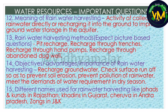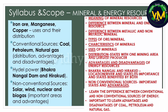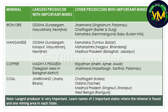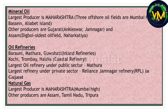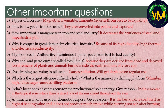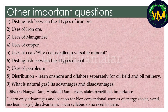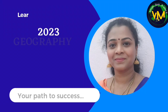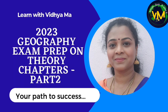Coming to mineral and energy resources - here is the syllabus and scope. Please learn the tabular column by heart. The largest producer of each mineral is an often-repeated question. Also learn two important states for each mineral and at least one mining area for each state. For mineral oil, learn oil refineries and oil fields separately. Under energy resources, the largest producers are very important. These are some other important questions often repeated in our board - make sure you can answer them correctly. So we have come to the end of this video. The remaining chapters will be discussed in the next part. I hope you are thorough with the answers now. See you soon in my next video. Bye-bye.